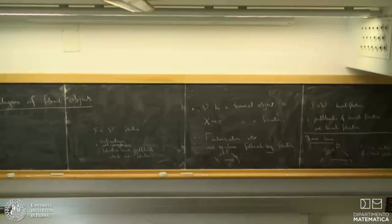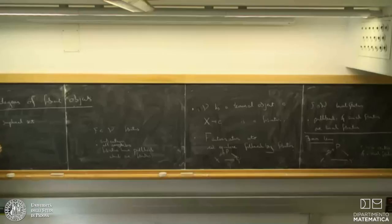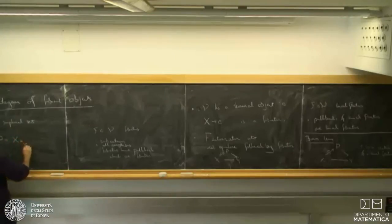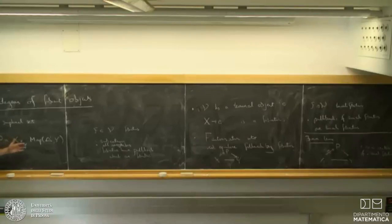As an example: if we have simplicial sets, fibrations will be Kan fibrations, weak equivalences will be weak equivalences, and for factorization we can take P to be the fibred quotient of X with the path space of Y. Serre introduces this in 1951 in the case of topological spaces, and then Moore and Kan extend this to simplicial sets. The idea now is to do derived algebraic geometry bearing this in mind.